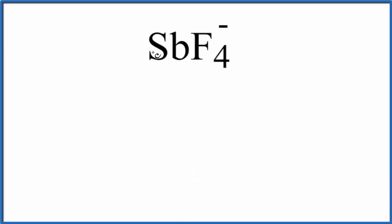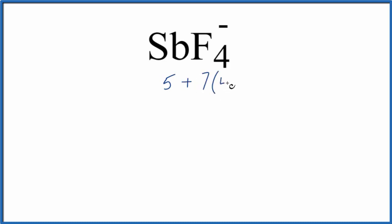In this video we'll draw the Lewis structure for SbF4-. The first thing we need to do is count the valence electrons. Antimony is in group 15, sometimes called 5A, so it has five valence electrons. Fluorine is in group 17 and has seven; we have four fluorine atoms, giving 28. The negative charge means we add one extra electron. So 28 plus 5 plus 1 gives us 34 total valence electrons for the SbF4- Lewis structure.